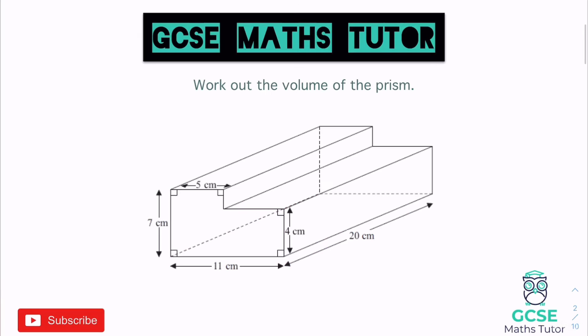This compound shape looks a bit like a set of stairs — two shapes have been put together to form a new shape. What we can do is chop up the cross section into two different rectangles. Looking at the cross section, we have an L-shaped hexagon. We can split it either horizontally — making a small rectangle on top and a larger one on the bottom — or vertically, giving two rectangles. It doesn't matter which way we split it, both will work.